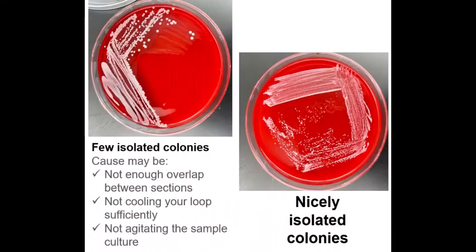If you don't have isolated colonies in your third and fourth quadrants you may not have enough overlap or you may have not agitated your sample before starting or you may not have waited long enough for your loop to cool between quadrants.